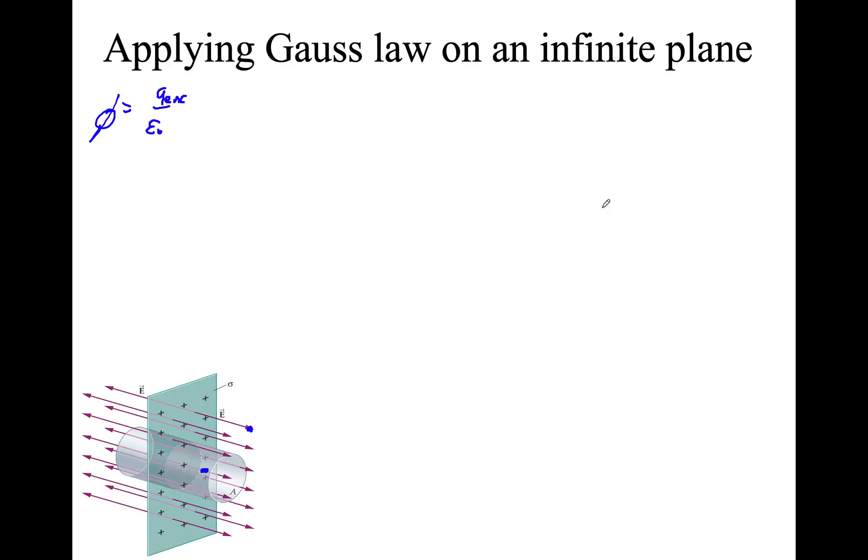So in this lesson we're going to apply Gauss's law on various different scenarios. This is special symmetries. Before we begin we need to remember the flux is q enclosed over epsilon 0. This is Gauss's law from the previous situation.